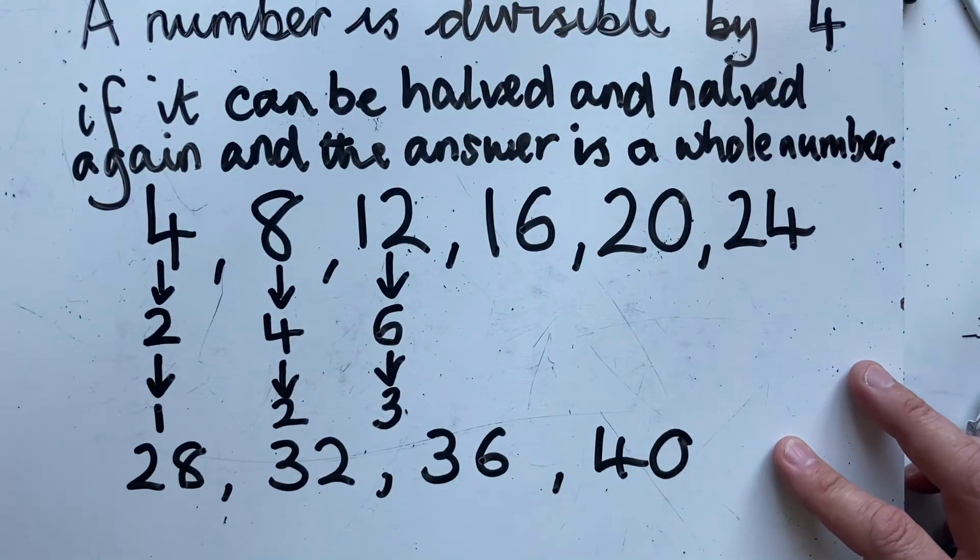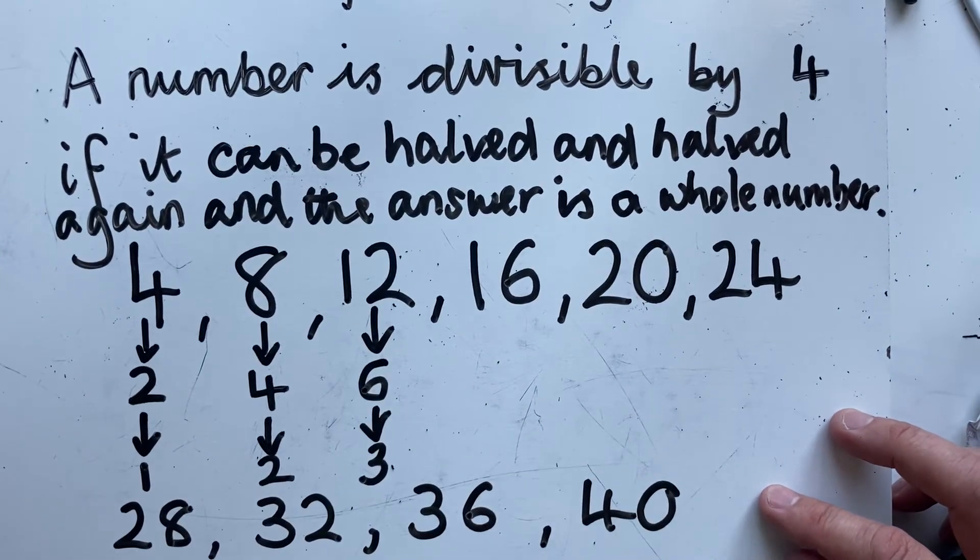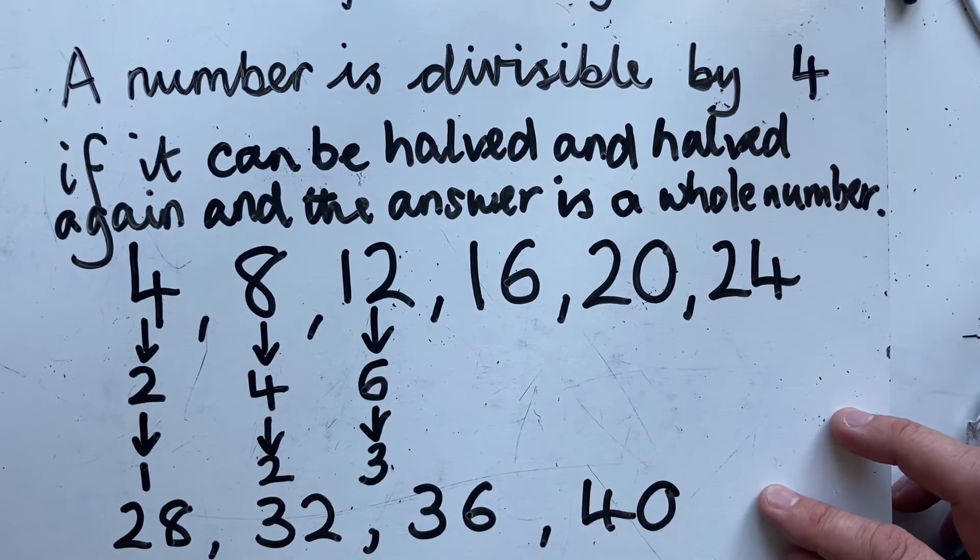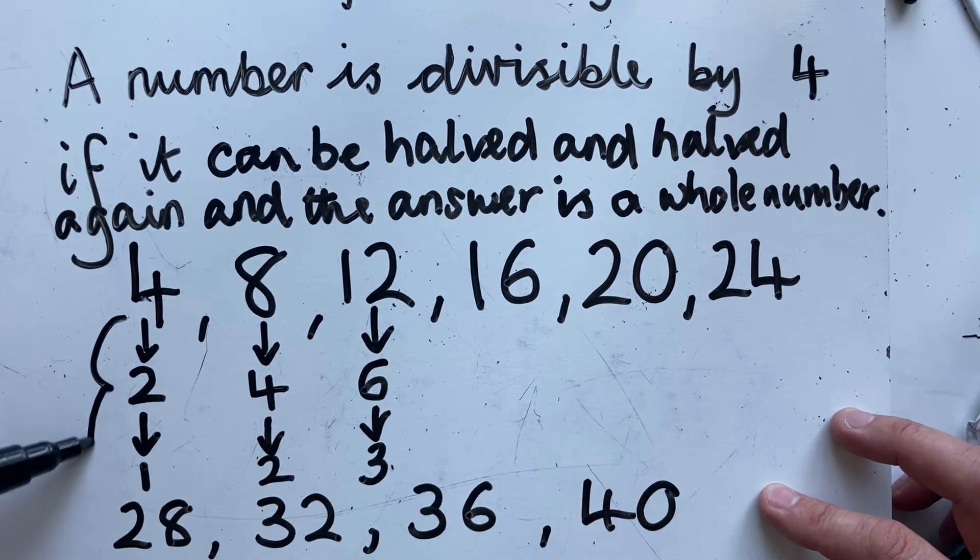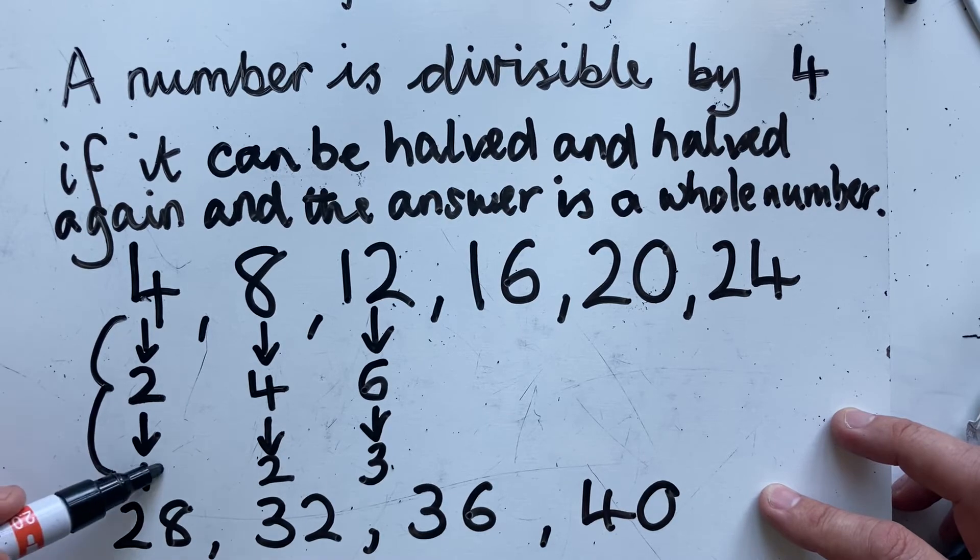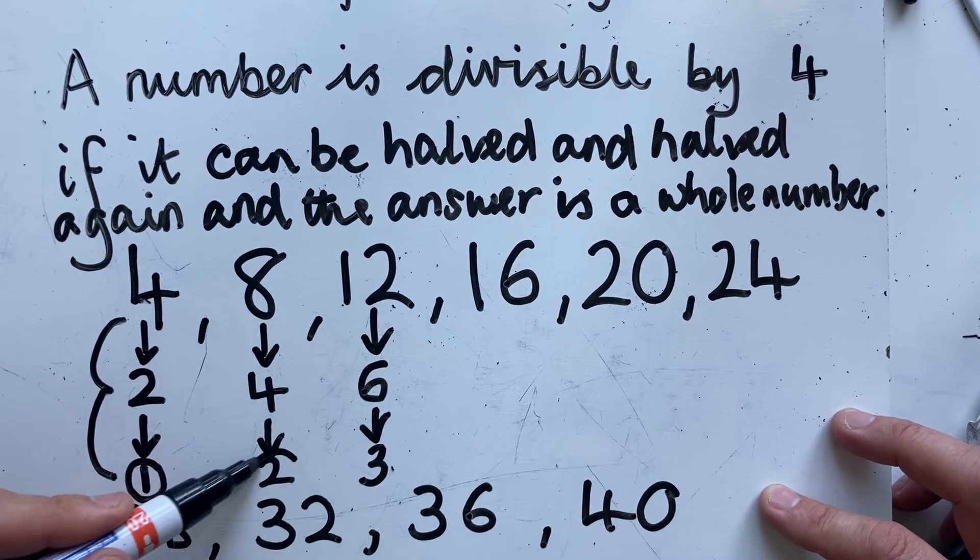Let me just repeat that. The number is divisible by 4 if it can be halved and halved again and the answer is a whole number. All of these are whole numbers.